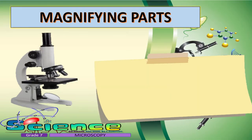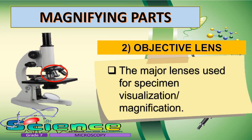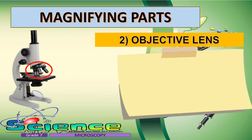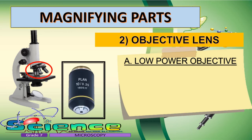The second magnifying part of a compound microscope are the objective lenses. Just like the ocular lens, their main job is to magnify the specimen under observation. These are the major lenses used for specimen visualization or magnification. Most compound microscopes have three objective lenses. The low-power objective has a magnification power of 10 times and is used to see the general outline of the specimen.